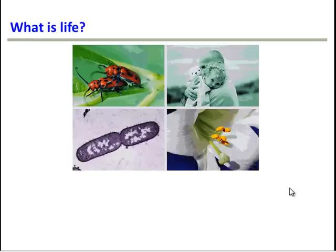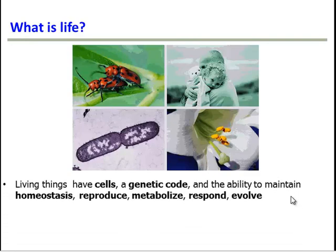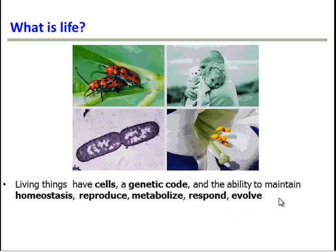Let's start by reviewing what it means to be alive. Living things have several characteristics: they're made of cells, they have a genetic code, they're able to maintain homeostasis, reproduce, metabolize energy, respond to changes in the environment, and, as a species, evolve over time.